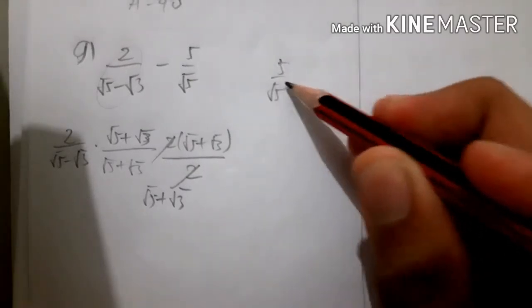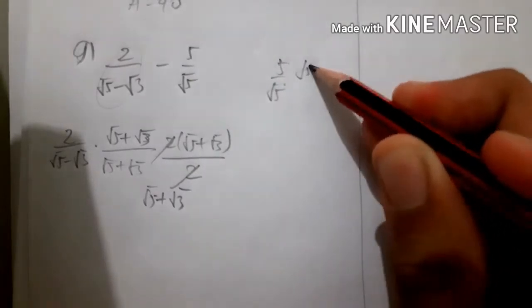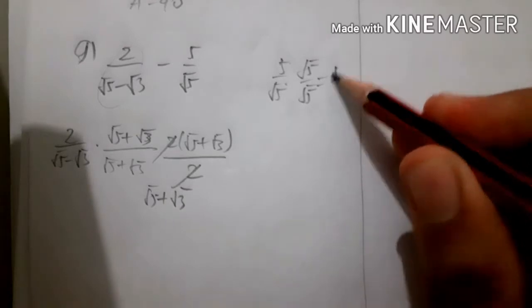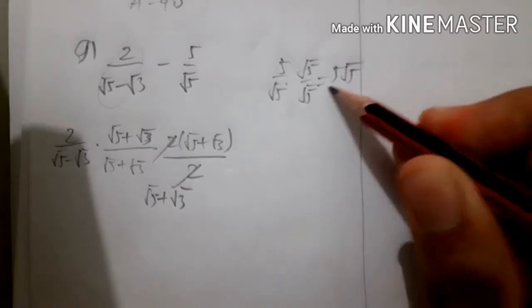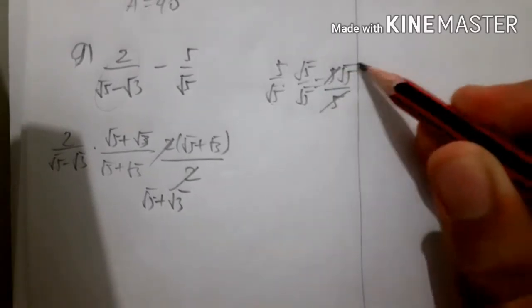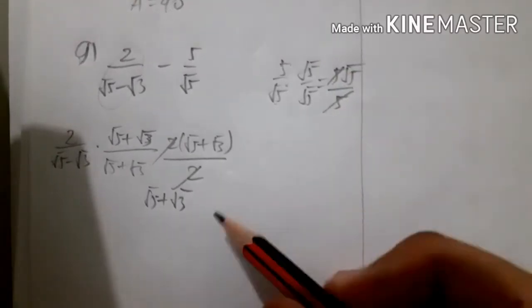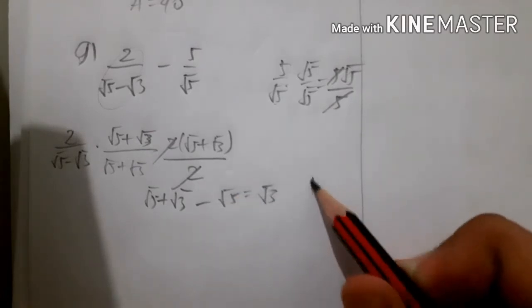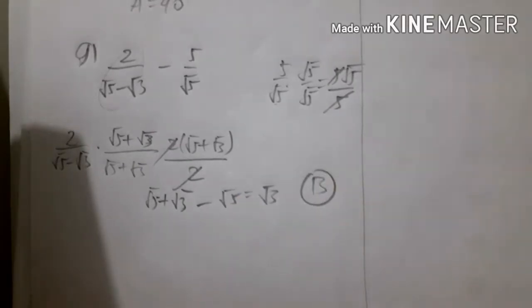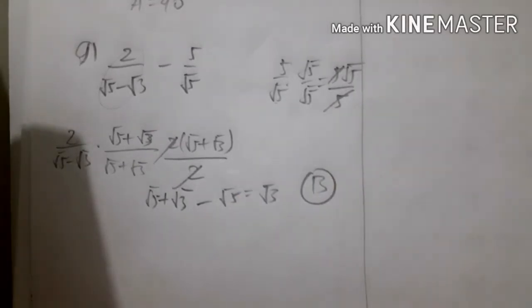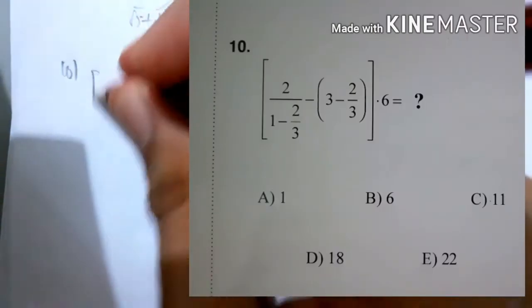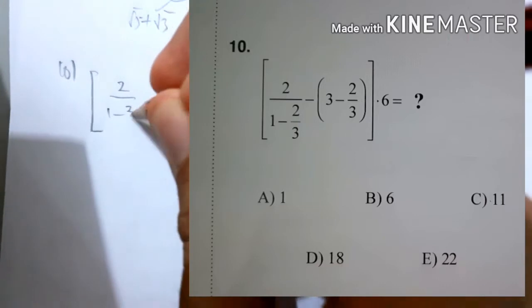Multiplying through gives 5 over root 5, which is root 5, so that is minus root 5. The answer is root 3 — the answer is B.